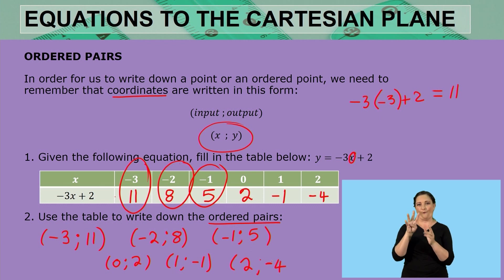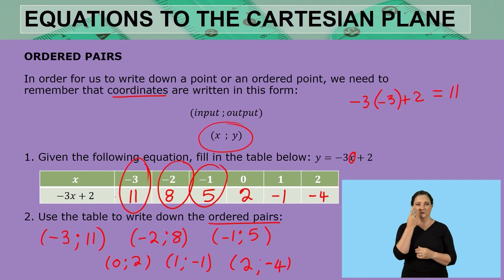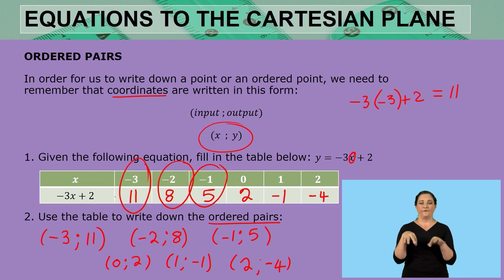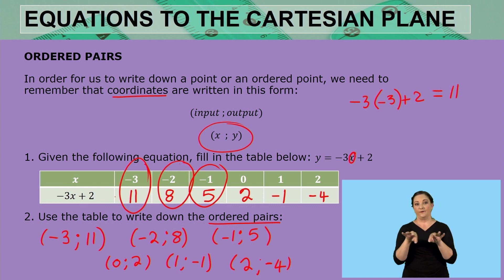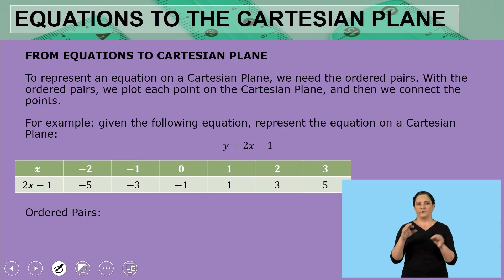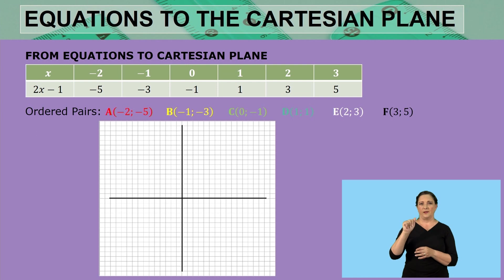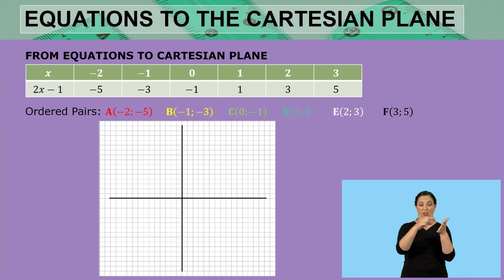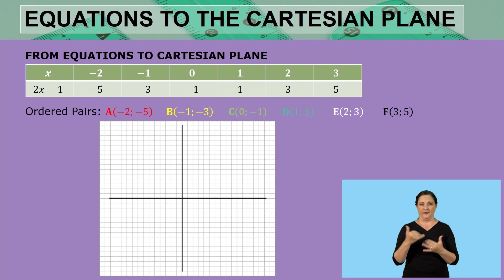The next ordered pair is 1 and negative 1, and finally 2 and negative 4. Those are our ordered pairs — inputs and outputs. The 11 is actually the first output value; that was a correction there. So we have our input values, output values, and ordered pairs. Let's use these to sketch our Cartesian plane.